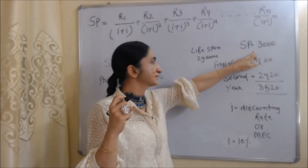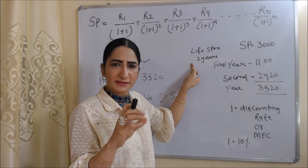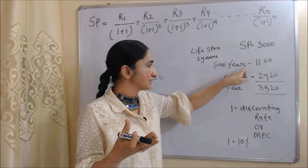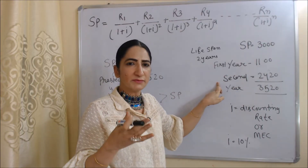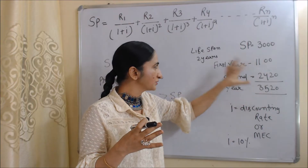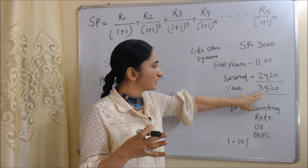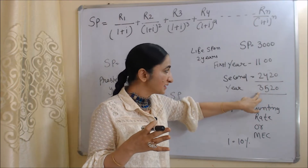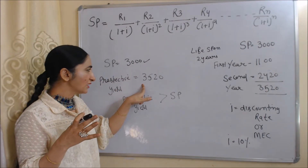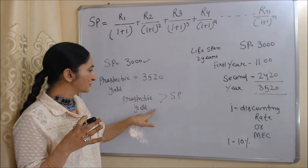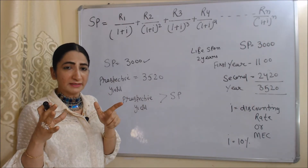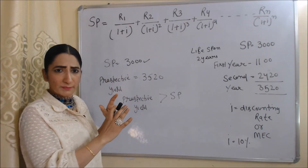Here we assume the supply price of the asset is 3,000 and the lifespan of the asset is only two years. In the first year, we expect a return of 1,100 from this asset, and in the second year, the expected return is 2,420. The total is 3,520, which is our prospective yield. So here, supply price is 3,000 and prospective yield is 3,520 — prospective yield is more than supply price. According to Keynes, marginal efficiency of capital is a discounting rate that makes prospective yield just equal to supply price.